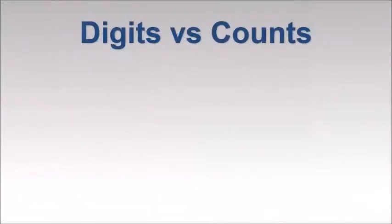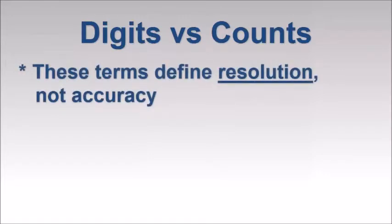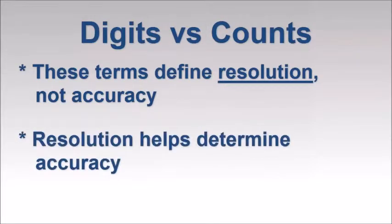Two terms critical to understanding accuracy are digits and counts. It's important to note that neither term defines accuracy. Instead, they define an instrument's resolution, a point we'll discuss shortly. Resolution is a key factor in calculating accuracy and uncertainty, so we need to clearly understand these concepts.